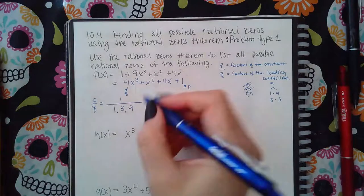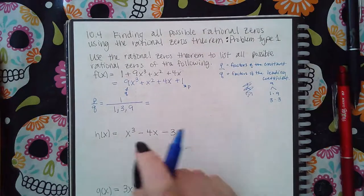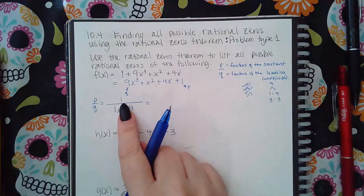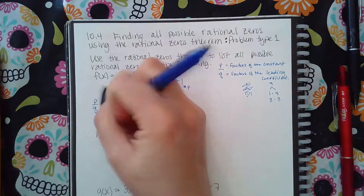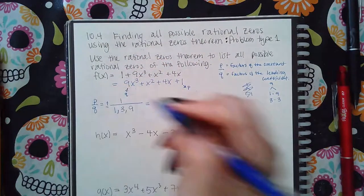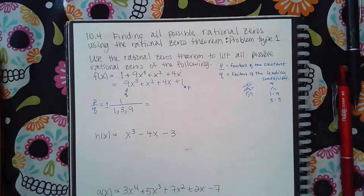So then what is the list? Now remember, you could have positives of these or negatives of these. So in the front of the fraction, I always put plus or minus because it could be any sign variation of these numbers.